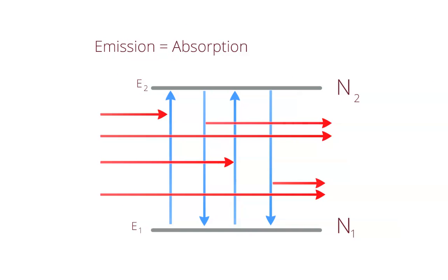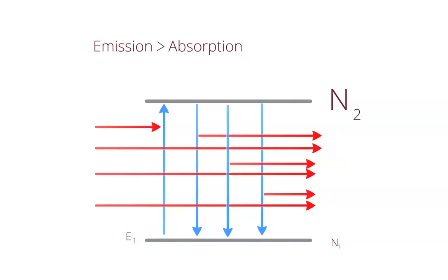If the number of atoms in the lower state N1 and the higher state N2 are equal, then the rate of emission and absorption are equal and we cannot get lasing. However, if there are more atoms in the higher energy state than the lower energy state, then there is more emission than absorption, the beam is amplified, and lasing occurs.